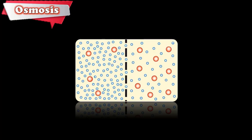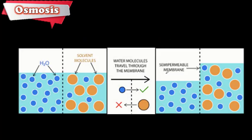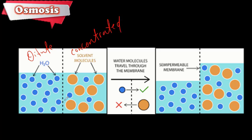Here we have a diagram showing how this happens. We have the dilute solution on one side and the concentrated solution on the other. This is the membrane. The water particles will move from the dilute solution to the concentrated solution. The water level in the concentrated solution will increase, because the membrane allows water but not sugar or other dissolved substances.